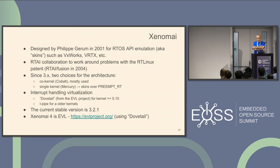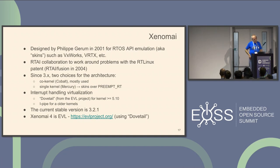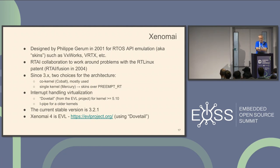Xenomai itself was designed by a French developer and expert in real-time called Philippe Jérôme. It was first developed for RTOS API emulation without any interest in the latencies in real-time itself. So it is what he calls skins. He developed some skins for VxWorks, VRTX, PSOS, etc. And in order to get better real-time behavior, he got in contact with the RTAI project. The first version of Xenomai with RT features was available in 2004.